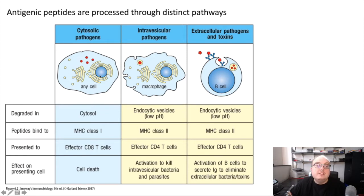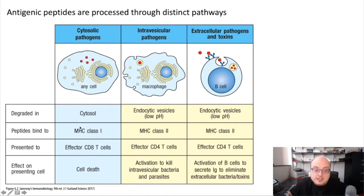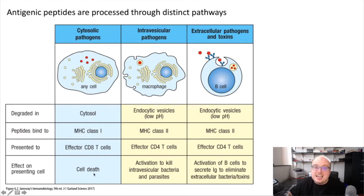Because cytosolic pathogens live inside the cytoplasm, they are susceptible to degradation there. We need to process the antigens from these pathogens through cytosolic pathways — endogenous pathways within the cell. These pathogens are degraded in the cytosol and end up being presented on MHC class 1 for reasons we'll get into in this lecture. Because they're presented by MHC class 1, they tend to activate effector CD8 T cells.